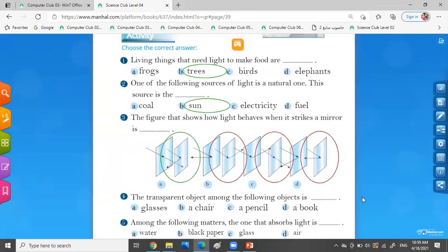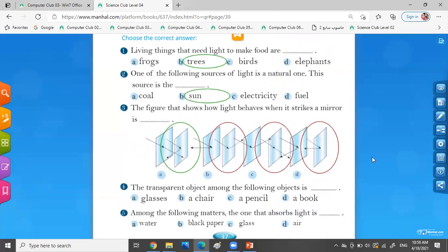The transparent object among the following objects is the glass. Among the following matters, the one that absorbs light is the black paper or the block of wood.